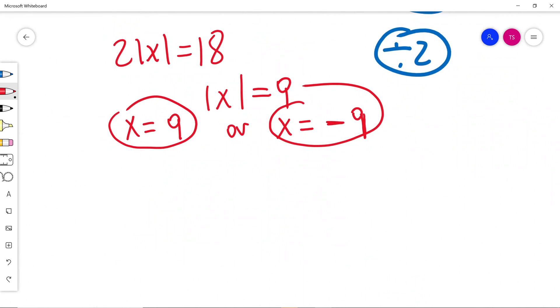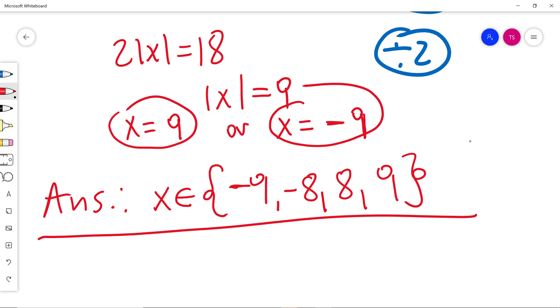Now I will just write final answer for the problem. So x belongs to the set of numbers. So my solutions was negative 9, negative 8, and 8, and also 9. That's my answer.